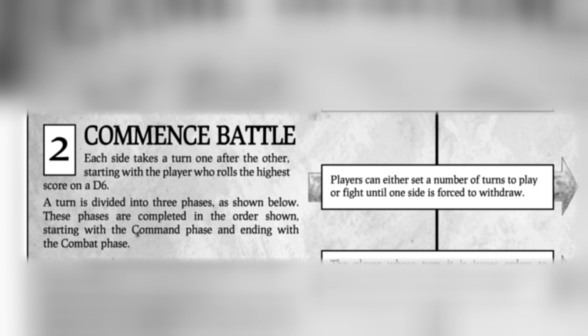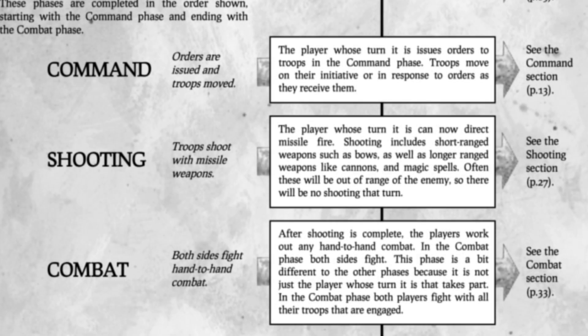Each side takes a turn one after the other, starting with the player who rolls highest on a d6. Players can decide to play for a set number of turns or fight until one side breaks and withdraws. A typical turn is divided into three phases in this order: the command phase, the shooting phase, and the combat phase. After a player completes their combat phase, their opponent begins their turn in the same way, until one side is defeated or the turn limit is reached.